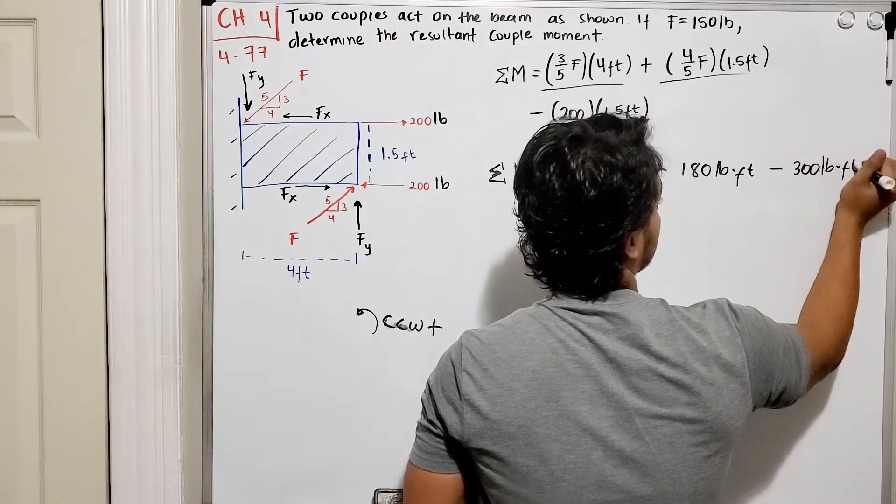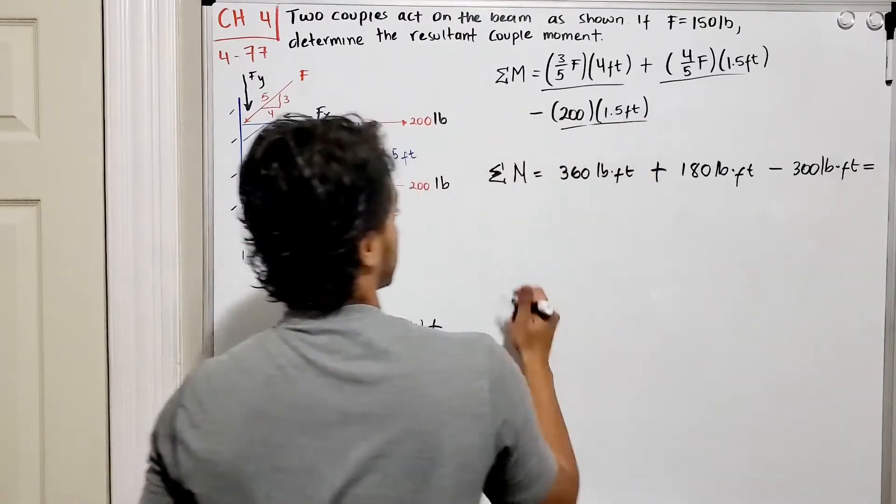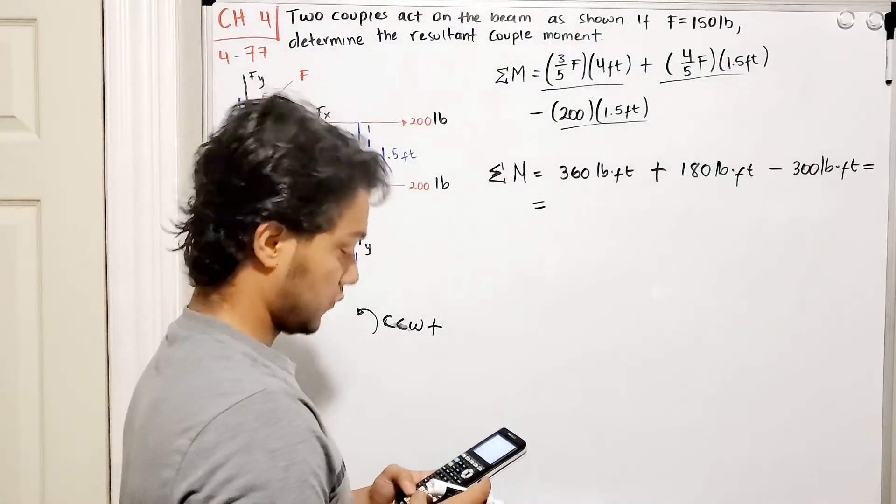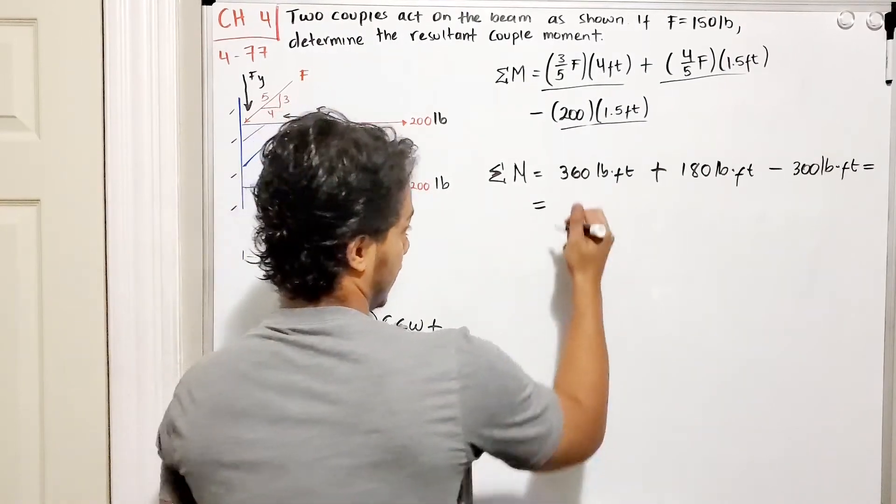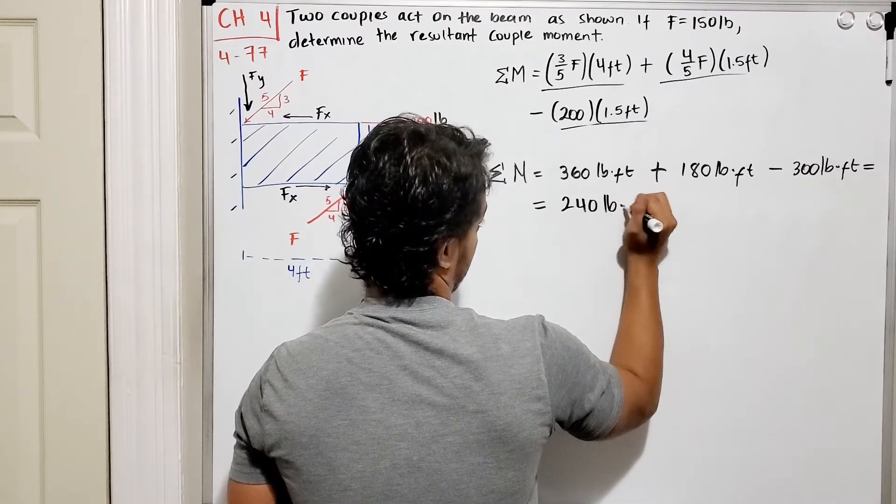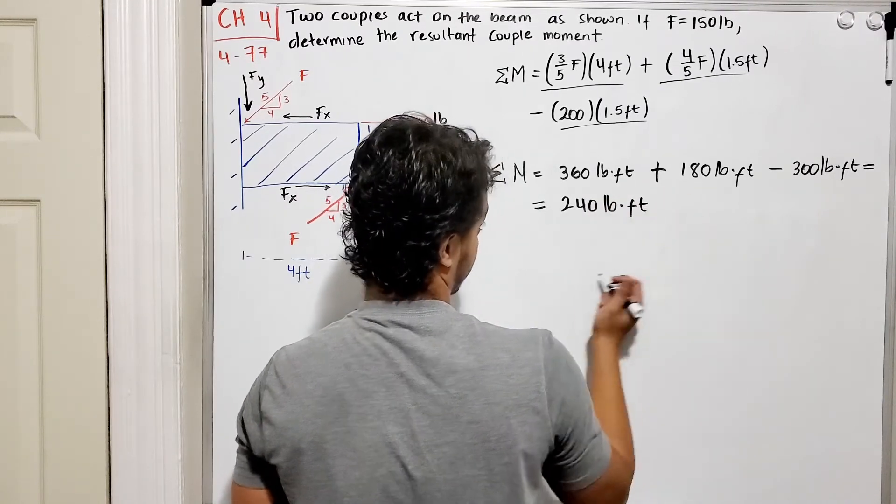What is this equal to? We add these guys up: we get 360 plus 180 minus 300, and that gives me 240 pound-feet.